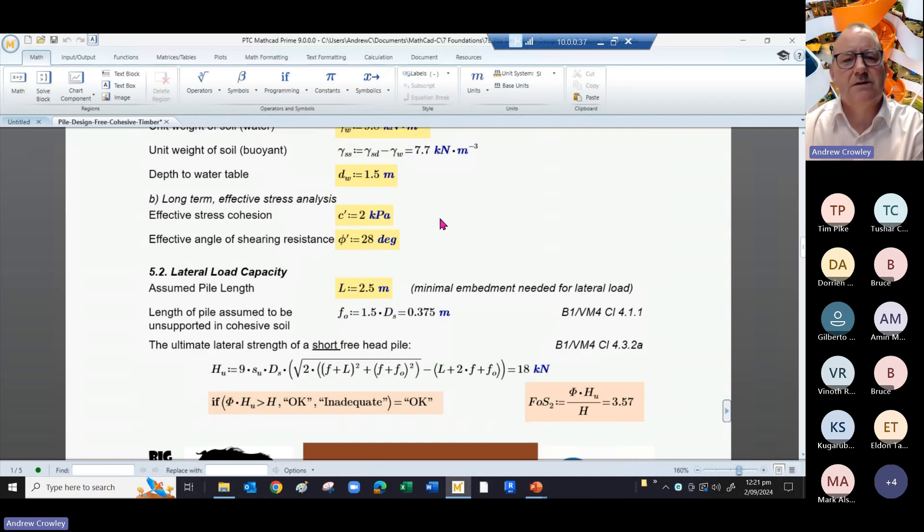For the long-term effective stress analysis, we've got an effective stress cohesion of 2 kPa, so not huge, and we've got an effective shearing resistance angle of 28 degrees.